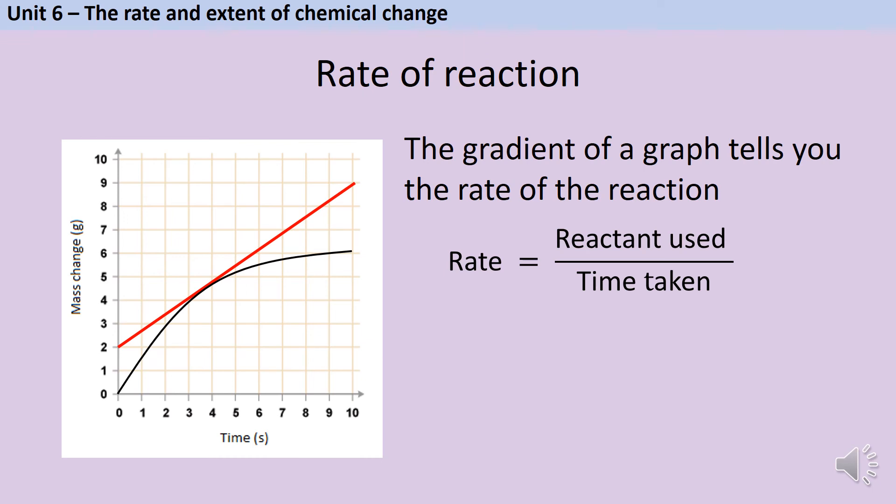You want to make your tangent as long as you possibly can because this will make it more accurate. And then you use that straight line and you work out the gradient of that straight line because it should be the same as the curve. So here my tangent goes from 2 grams to 9 grams, which is a change of 7 grams. And that's taken 10 seconds. So 7 divided by 10 gives me a rate at the 4 second mark of 0.7 grams per second.